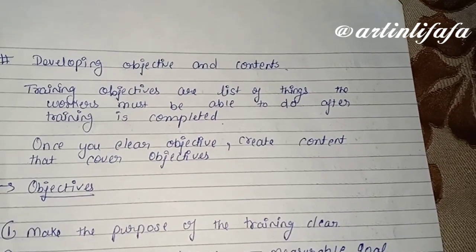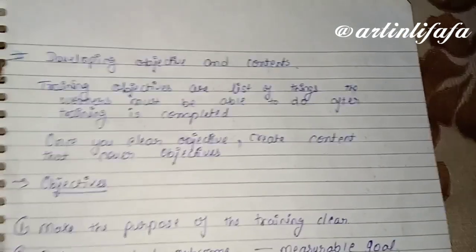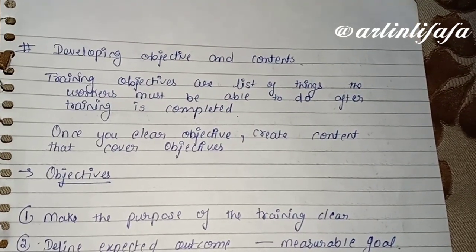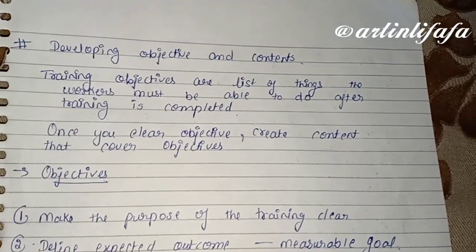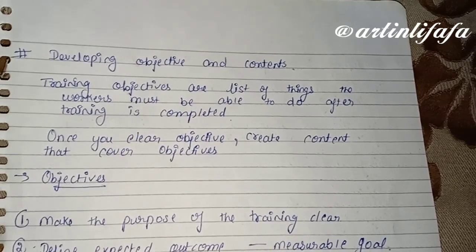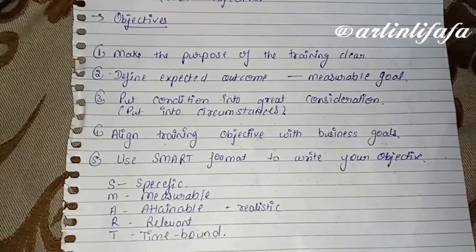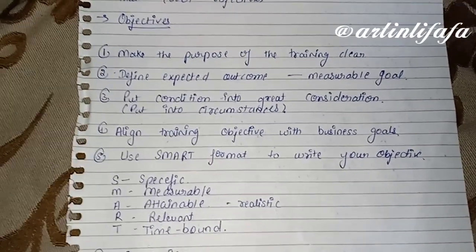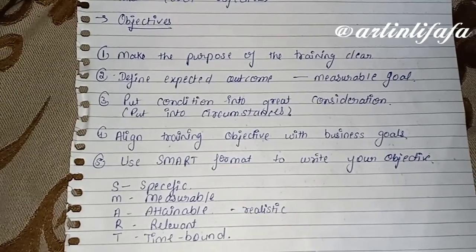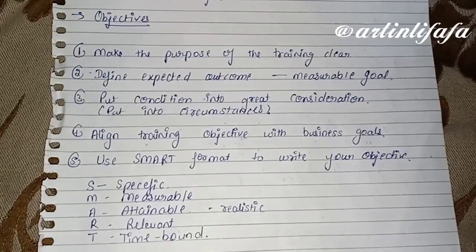Training होने से पहले employee सोचता है कि मुझे ये सारी चीज़ें achieve करनी हैं — वो एक objective set करके चलता है। Once you clear your objective, create content that covers all the objectives। वो objective क्या-क्या होते हैं जो एक employee content में डालता है: सबसे पहले, to make the purpose of the training clear।